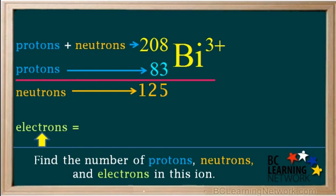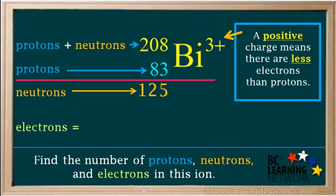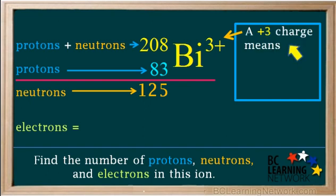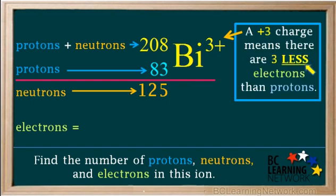Now we need to find the number of electrons. Look at the ion's net charge on the top right of the symbol. Protons are positive and electrons are negative. So a net positive charge results when there are less negative electrons than positive protons. So a positive 3 charge means there are 3 less electrons than protons.